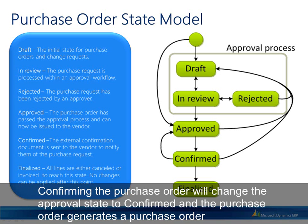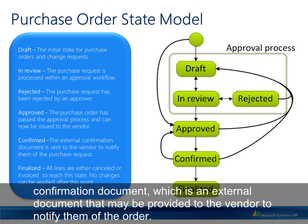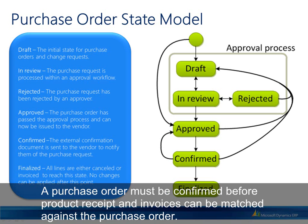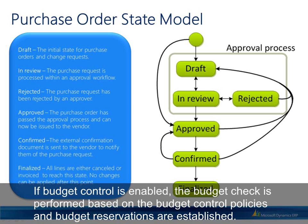Confirming the purchase order will change the approval state to confirmed, and the purchase order generates a purchase order confirmation document, which is an external document that may be provided to the vendor to notify them of the order. A purchase order must be confirmed before product receipts and invoices can be matched against it.